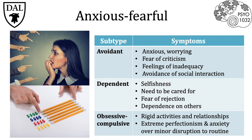The third and final cluster of personality disorders is anxious/fearful, of which there are three subtypes. In general, this cluster describes someone who has a persistently high level of anxiety, nervousness, and fear in many different situations. The first subtype is avoidant personality disorder — someone who is so afraid of being criticized that they will avoid interacting with others altogether and become completely socially isolated.